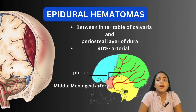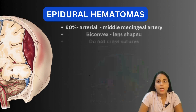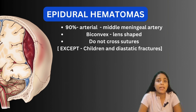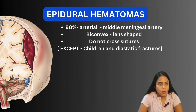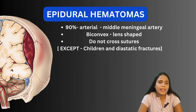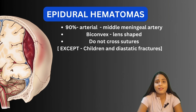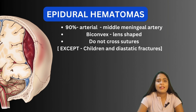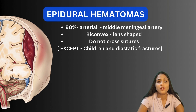90% of the bleed in an epidural hematoma comes from the middle meningeal artery. Their shape has been classically described as biconvex or lens-shaped because the periosteal layer of the dura is very tightly adhered to the inner table of the calvaria and gets stripped as the EDH expands, so the middle portion will always be thicker compared to the ends. At the suture, this attachment is very adherent, and therefore EDHs usually do not cross sutures. Two exceptions: in children, because the sutures are not yet ossified, and in diastatic fractures.